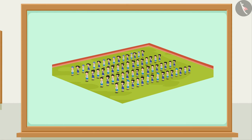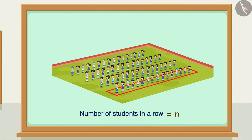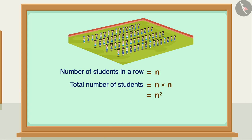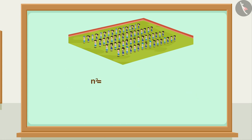We have learned how to find the square of numbers in the previous video. If there are n students in a row and there are n such rows, then the total number of students will be n times n, which equals n to the power of 2 — that is, the square of n, which we also call n squared.